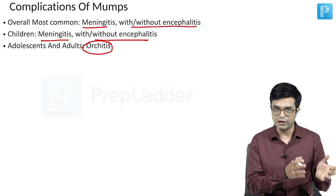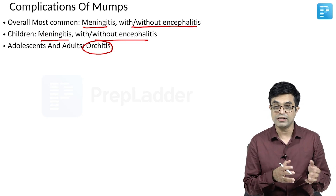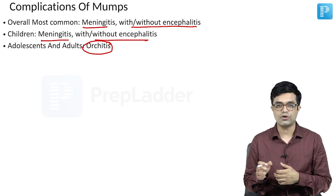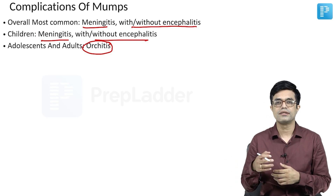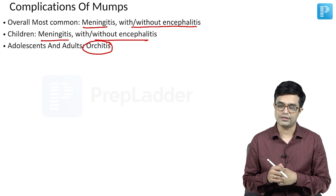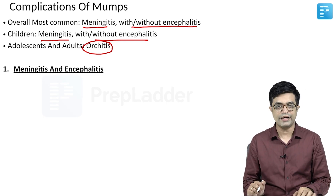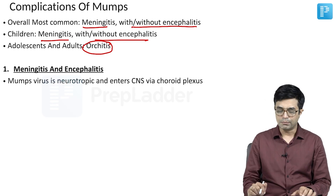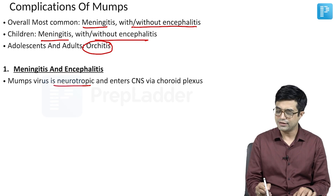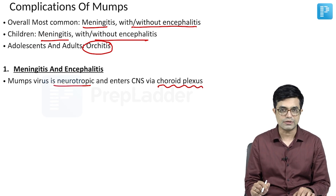In young children it will be CNS involvement — meningoencephalitis or meningitis — and in older patients, adolescents and adults, you will mark orchitis as the likely answer. Now, the first complication is meningitis and encephalitis. Mumps virus is a neurotropic virus and it enters the CNS via the choroid plexus once viremia happens.